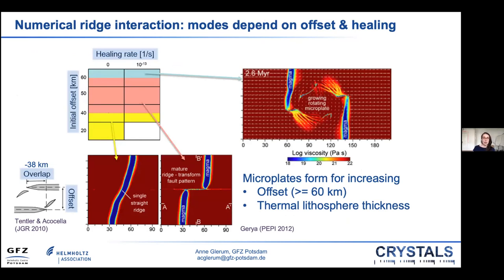In analog as well as numerical models of rift interaction, the initial offset of the approaching ridges — the lateral distance between the two approaching ridges — was shown to be important. For example, Garion used 3D numerical models of initially underlapping ridges and showed that for short initial offsets up to 40 kilometers, straight oblique connections form; for intermediate offsets of 40 to 60 kilometers, we get transform faults; and for 60-kilometer offsets we get overlapping spreading centers with a growing rotating microplate in between.